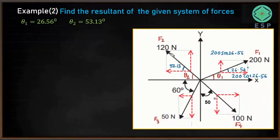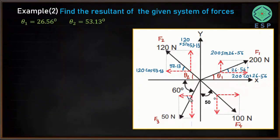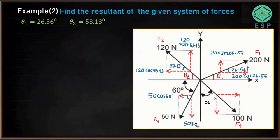For the 120 Newton force (F2), the angle theta 2 is 53.13 degrees. Along the x direction it will be 120 cos 53.13, and along the y direction it will be 120 sin 53.13. For the 50 Newton force (F3), since the angle is 60 degrees, along the x direction it is 50 cos 60, and along the y direction it is 50 sin 60.